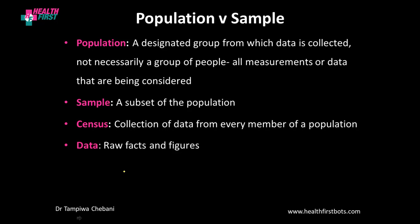Definitions of population and sample: in statistics, a population refers to a designated group from which data is collected. It won't necessarily be a group of people — it can be a group of whatever you are studying. For example, if you are a biologist studying trees, your population would be a population of trees. If you are interested in cars on an assembly line, then your population is cars, and you draw a sample representing that population.